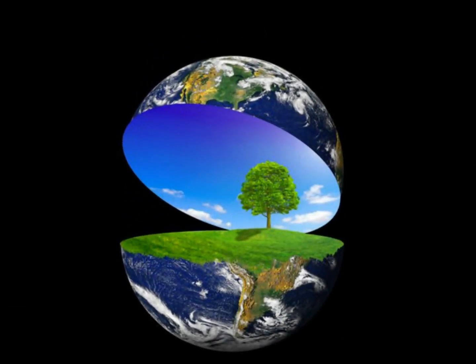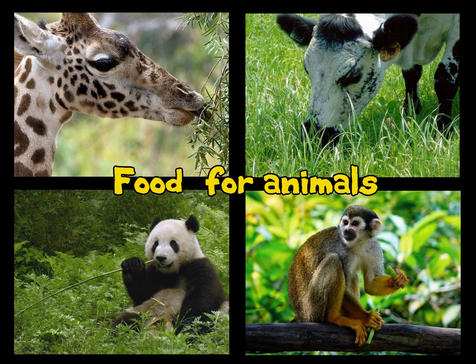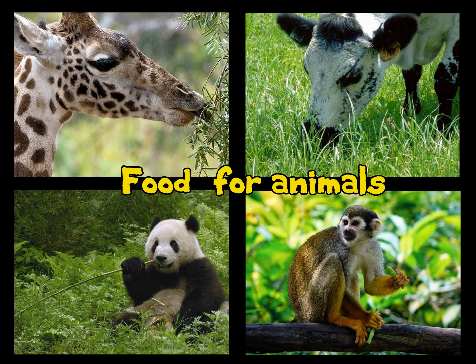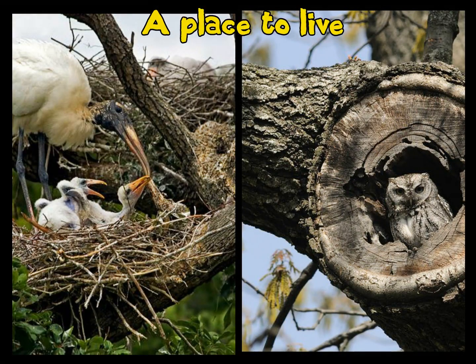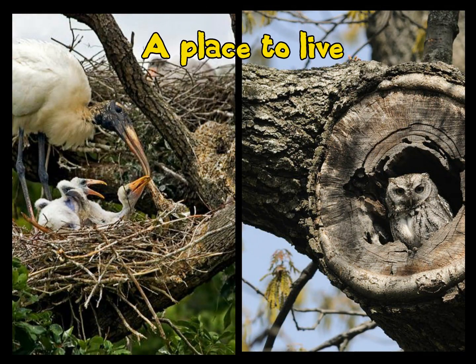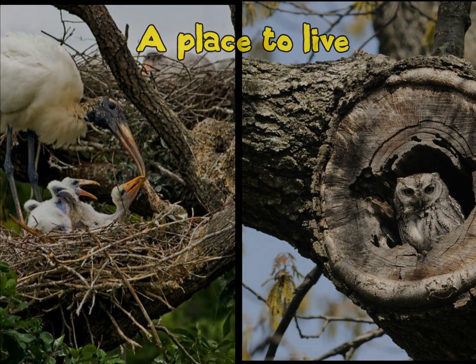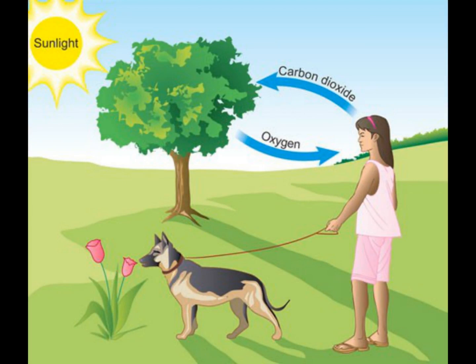Plants are central to life on Earth. Plants create food for animals to eat. They also provide a place for animals to live. Plants produce the oxygen that is in the air that we breathe.